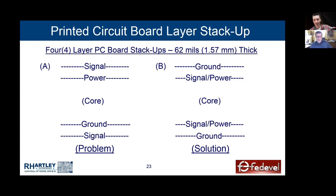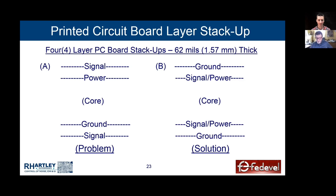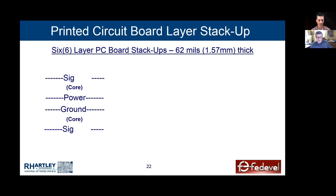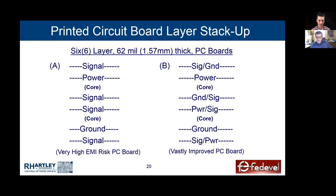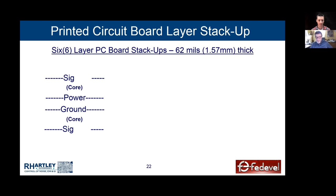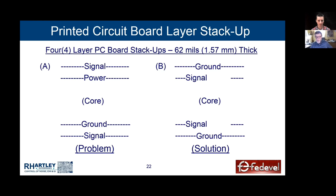Ground on top and bottom was the right thing to do in this case because power was on layers two and three with the signals. This is why you sometimes see PCBs with ground on top and bottom — not as a shield, but as a reference for signals and power. In Lee's board, ground on top and power on bottom was right because it generated alternating power/ground structure.